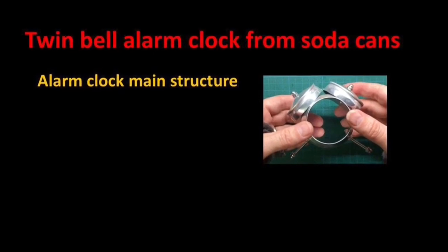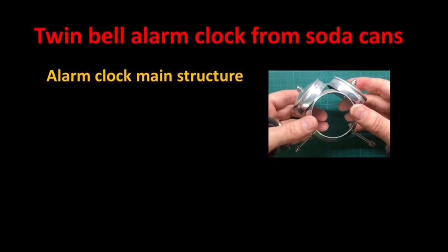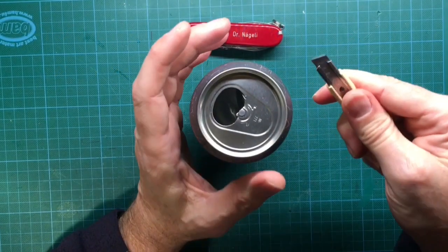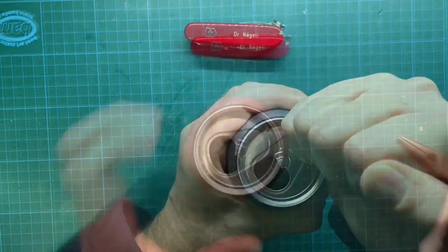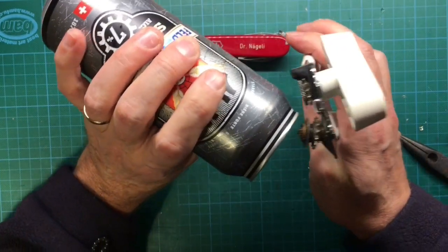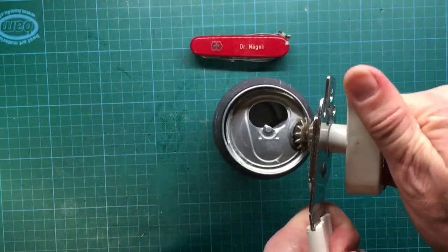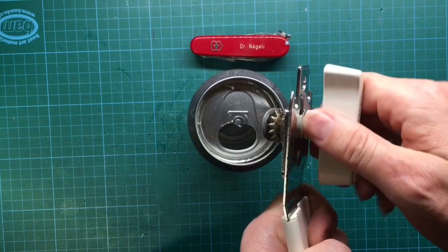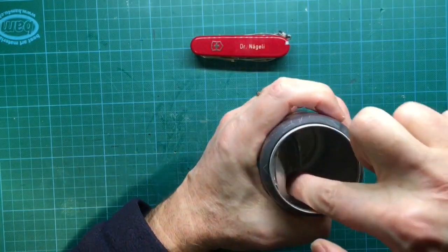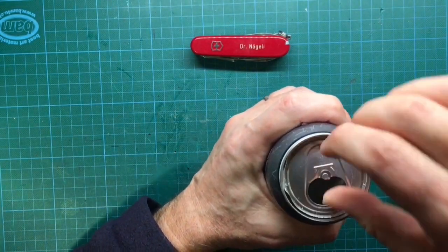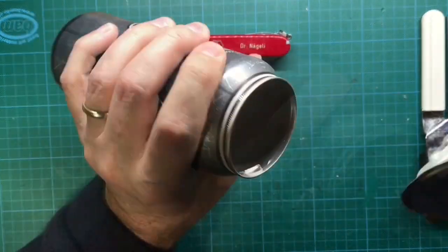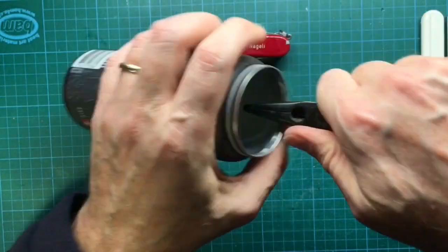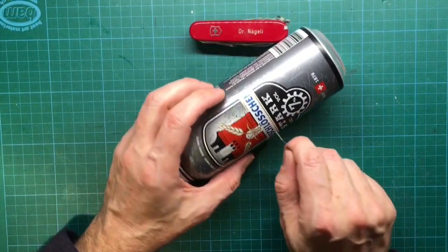Okay let's get started with the chapter on how to make the main clock structure. With a sharp exacto knife make a strong groove into the lid of the soda can. With the help of a can opener you detach the lid from the soda can. This does not always work perfectly so you have to take the rest out with pliers. Then you cut the soda can in half.